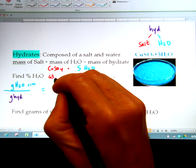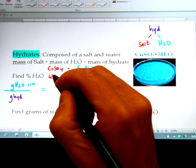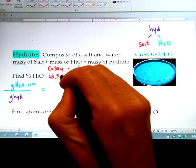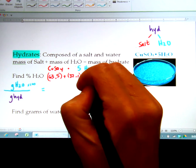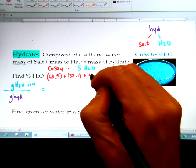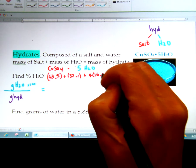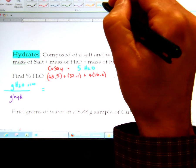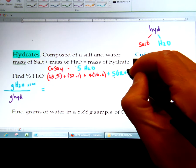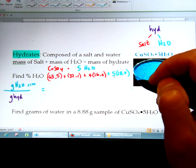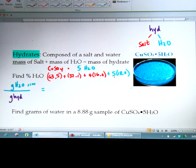Copper is 63.5, sulfur is 32.1, there are four oxygens so four times 16, and then we're going to add that with five waters. And we already know water weighs 18. So if we do the math for this, let's do the five waters first. We know that five times 18 is going to be 90.